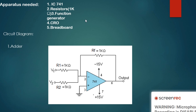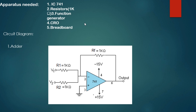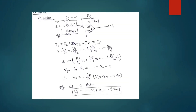Now coming to the main experiment — the use of op-amp as adder, subtractor, and comparator. The apparatus needed are IC741, resistors all of 1 kilo-ohm, a function generator, CRO, and a breadboard. Here is the circuit diagram for the adder. There are inputs V1, V2 up to Vn, and we have to find the output V0. Due to the virtual grounding concept, the potential at the inverting terminal is 0.